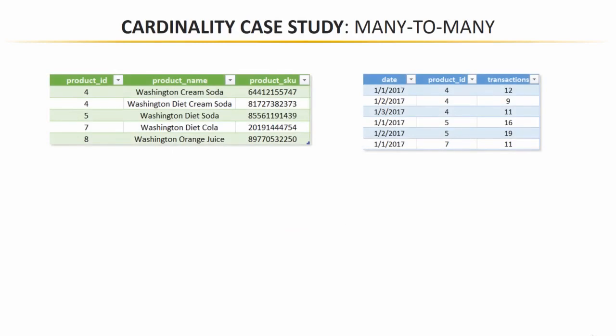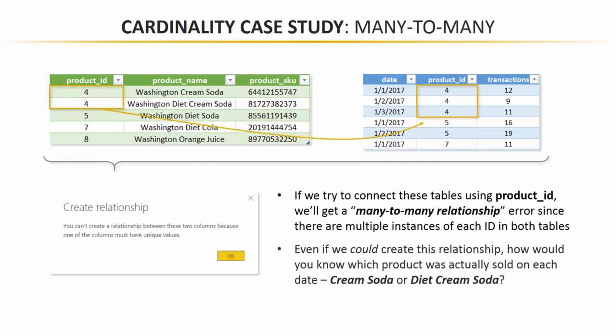Our first cardinality case study is many-to-many. Consider these two tables: a product lookup table in green on the left, which has IDs, names, and SKUs, and a data table in blue on the right, which has dates, product IDs, and transactions. If you were to try to create a relationship between these two tables, you'd get an error message. Power BI will tell you that you can't create a relationship because one of the columns must have unique values — we've got two instances of product ID number four in the lookup table and three instances in the data table.